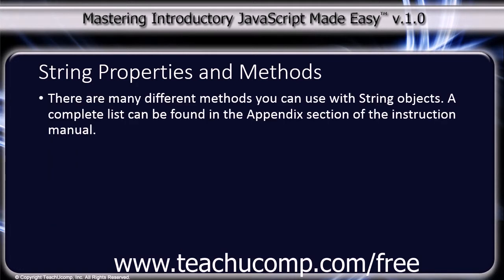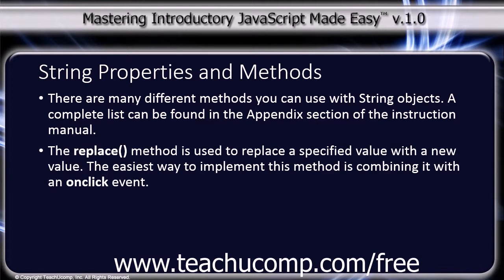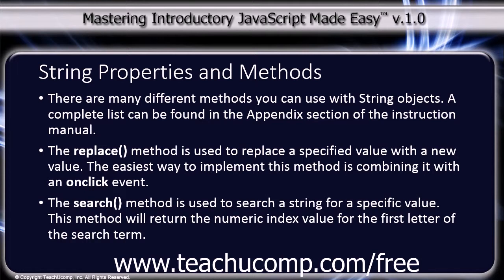There are many different methods you can use with string objects. A complete list can be found in the appendix section of the instruction manual. The replace method is used to replace a specified value with a new value. The easiest way to implement this method is combining it with an on-click event. The search method is used to search a string for a specific value, and will return the numeric index value for the first letter of the search term.